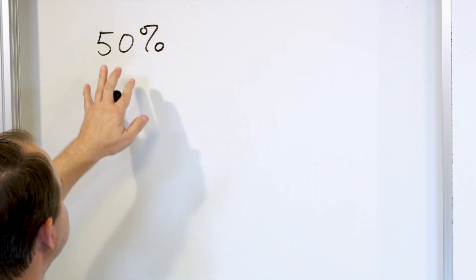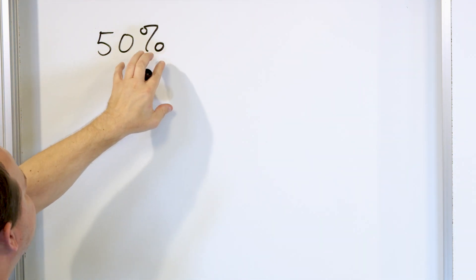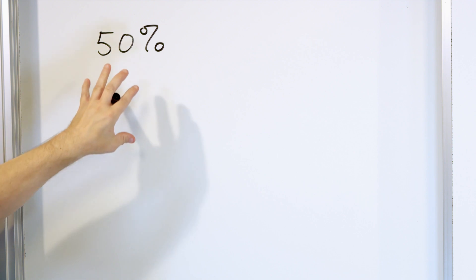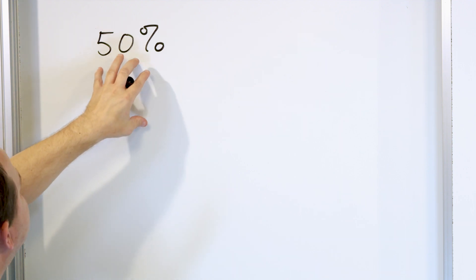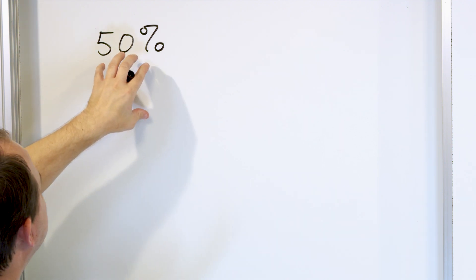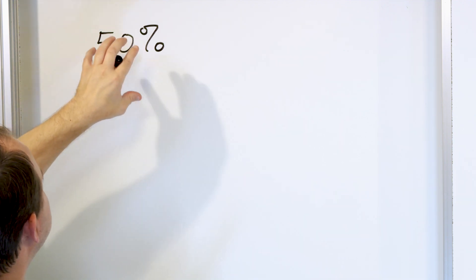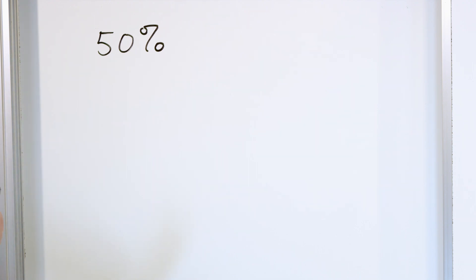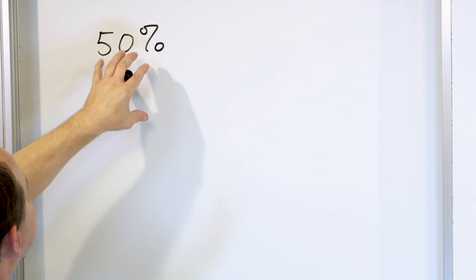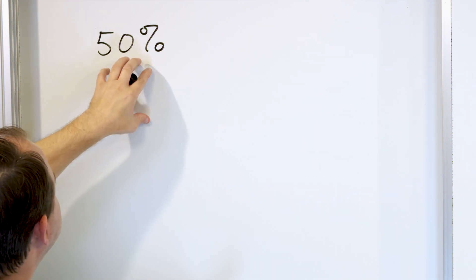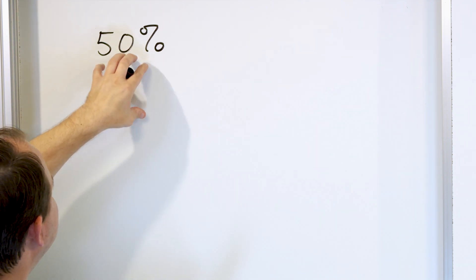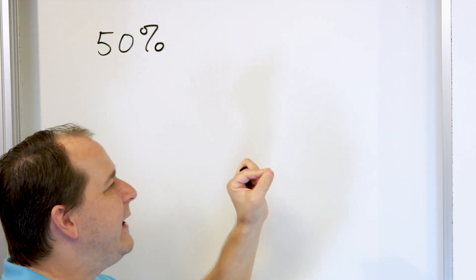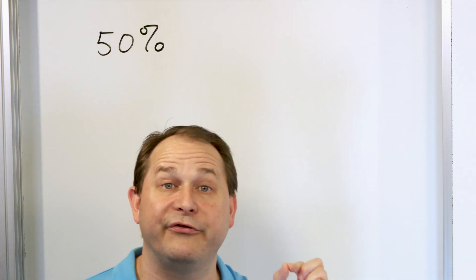We write percent like this. If I say give me 50 percent of your money, I write it like this. If I say the price of the watermelon is 50 percent off, I write it like this — that means half off. If I say it's going to rain with a 50 percent chance, this is how I write it. But there are other ways to write percentages.